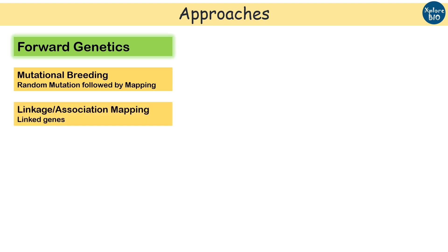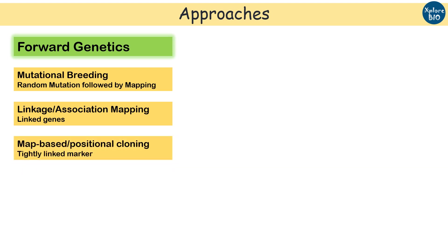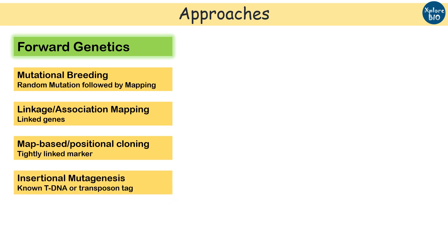The second approach is linkage and association mapping, where you determine the genes associated with a trait based on their linkage after several crosses. The third is map-based cloning: you start with a genetic map and determine a marker tightly linked to the target gene affecting the phenotype, which is identified by sequencing.